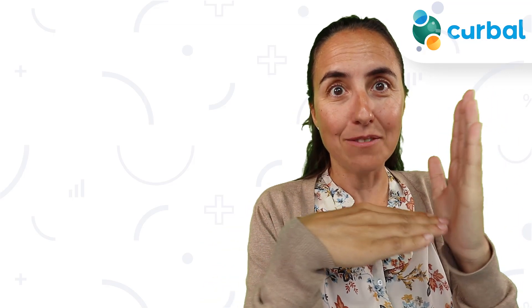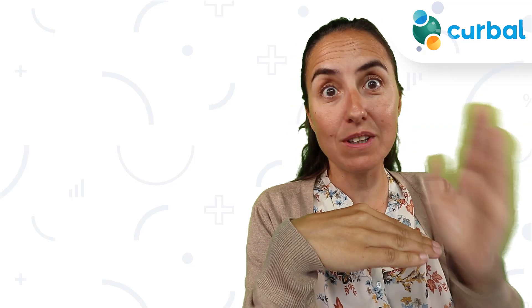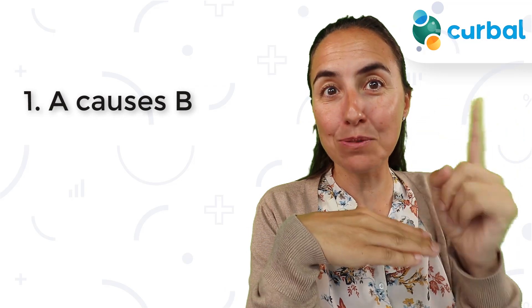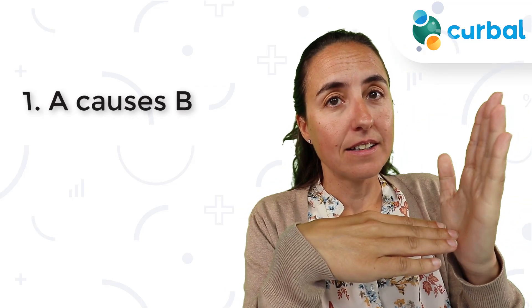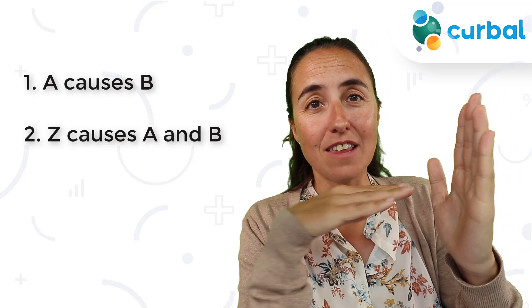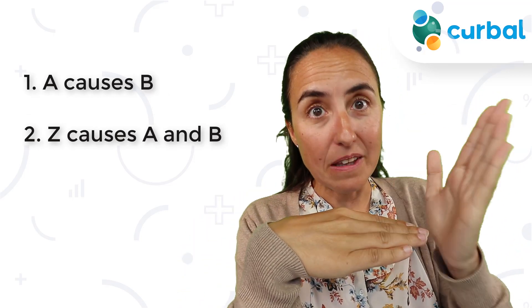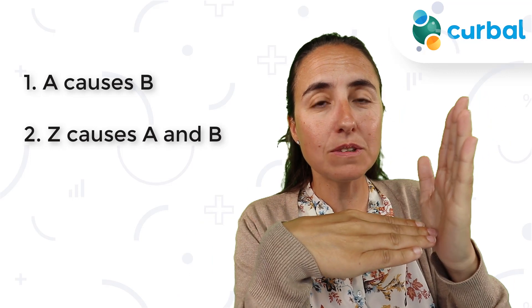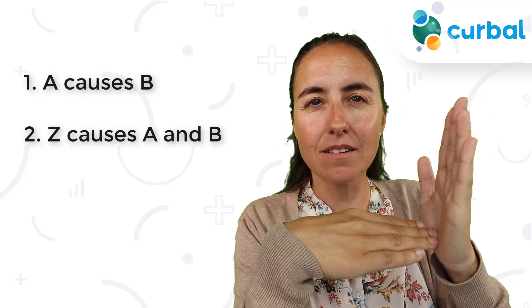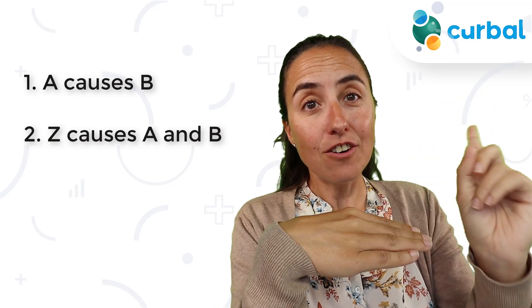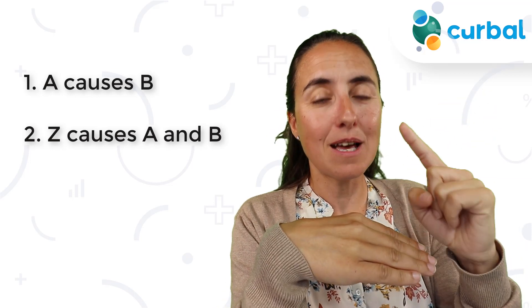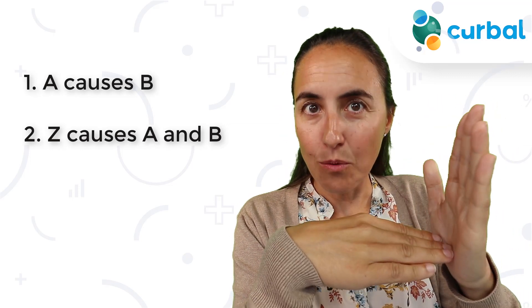Number one: variable A, views, can predict variable B, the number of subscribers — A causes B. Then another outcome is that Z, some third variable altogether, causes both A and B, and then those two seem to be correlated as if they cause one another, when in fact it's a third variable causing that.